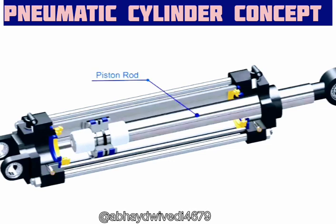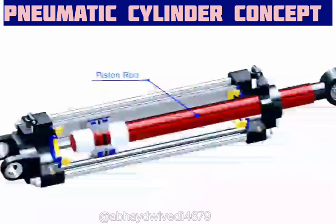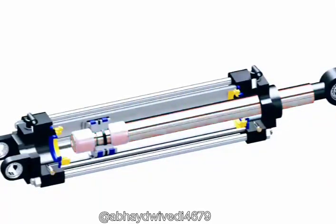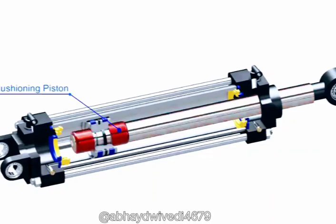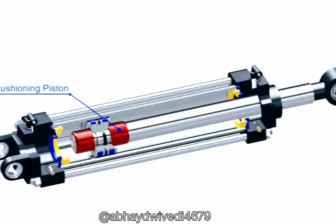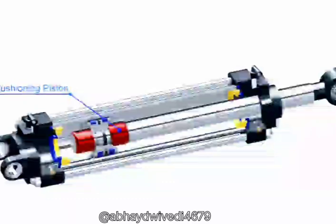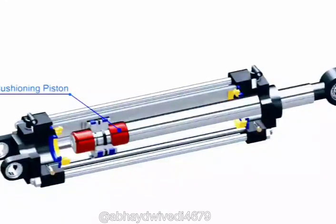It consists of a piston rod, which transfers the force of compressed air to the load. Cushioning pistons are assembled with this rod. These pistons prevent any hard shocks at the end of the stroke by enabling the piston to stop slowly and gradually.